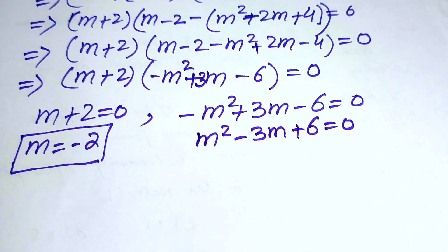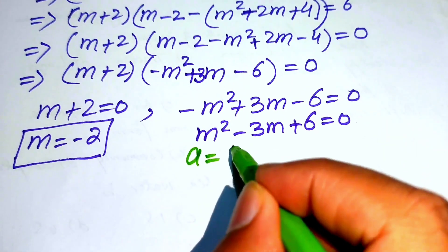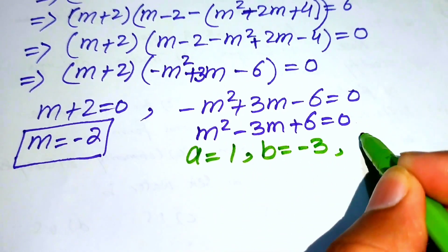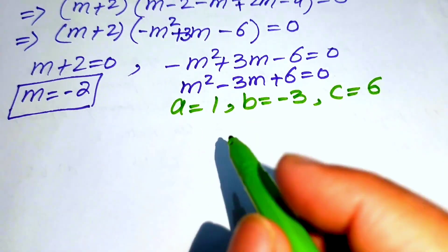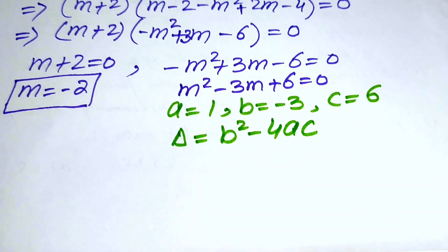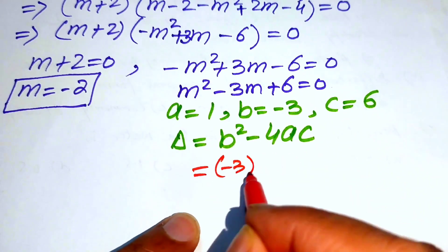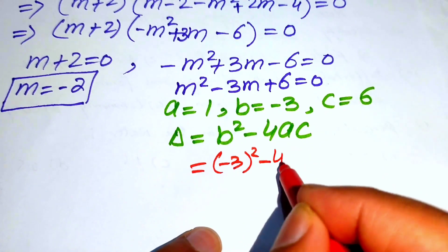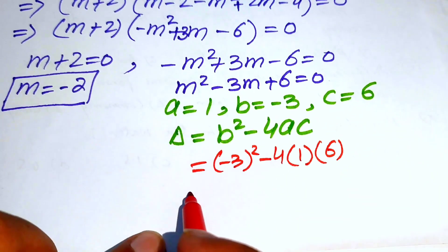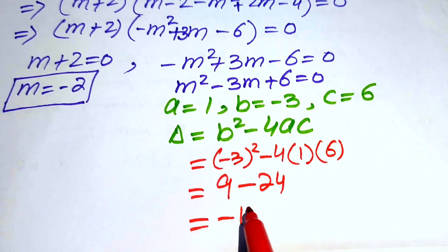We check whether this quadratic has real roots using the discriminant. The coefficients are a equals 1, b equals minus 3, c equals 6. The discriminant is delta equals b squared minus 4ac equals (minus 3) squared minus 4 times 1 times 6, which gives 9 minus 24 equals minus 15.